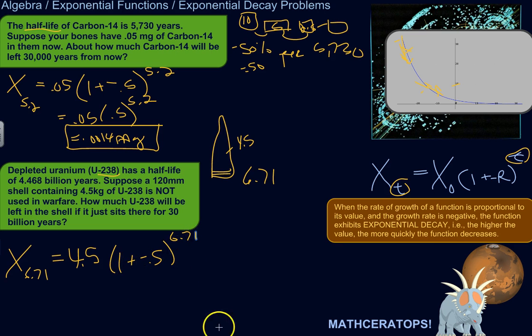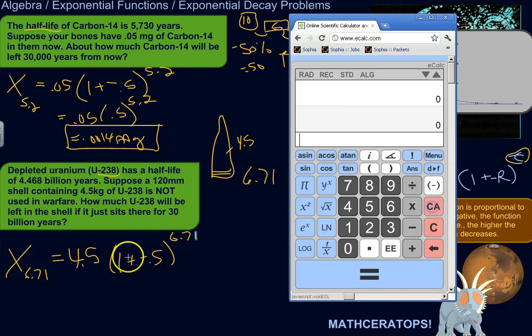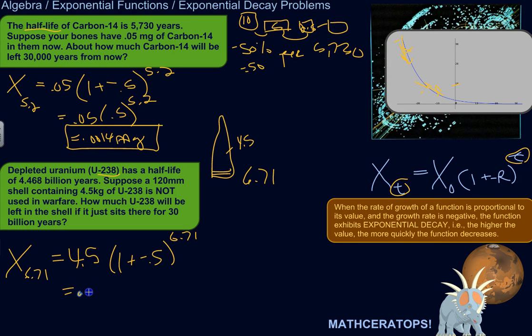So let's do it. So 1 plus negative 0.5 is 0.5, so 0.5 raised to the power of 6.71 times 4.5. So 0.043, let's say. Let's round it. 0.043 kilograms of U-238 will still be there. That's still a lot. So after 30 billion years. So there you go.